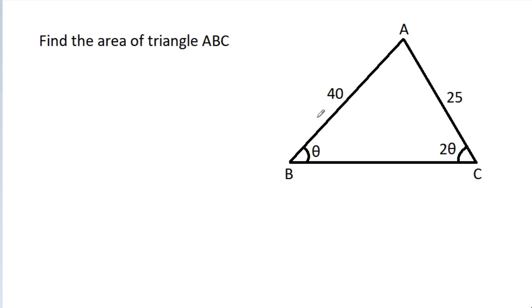In this video, we have been given that AB is 40, AC is 25, angle ABC is theta, and angle ACB is 2 theta. We have to find the area of triangle ABC.